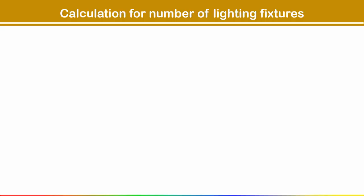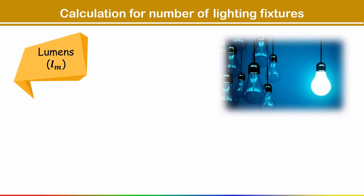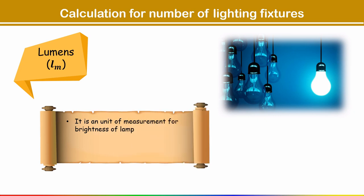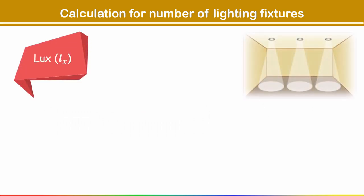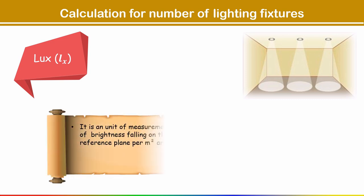Before going through calculation of lighting fixtures, there are some important terms to discuss. The first term is lumens, represented by LM. It is a unit of measurement for brightness of a lamp, denoted by LM. This lumens value will be provided by the manufacturer of the lamp.